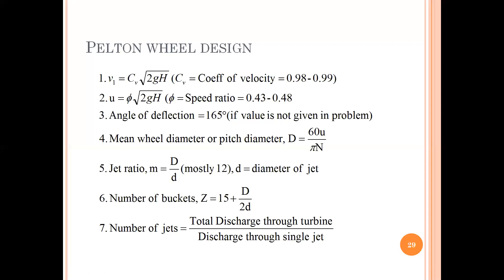Your number of jets is the total discharge to the turbine divided by the discharge through a single jet. You can have turbines where multiple jets — three, four jets — are present. So your number of jets is decided by total discharge divided by discharge through a single jet. With this I come to the end of my design. The next class we will be doing problems related to Pelton wheel. Thank you.